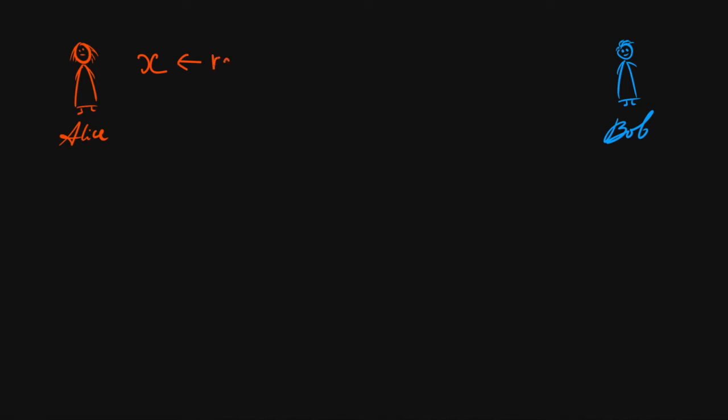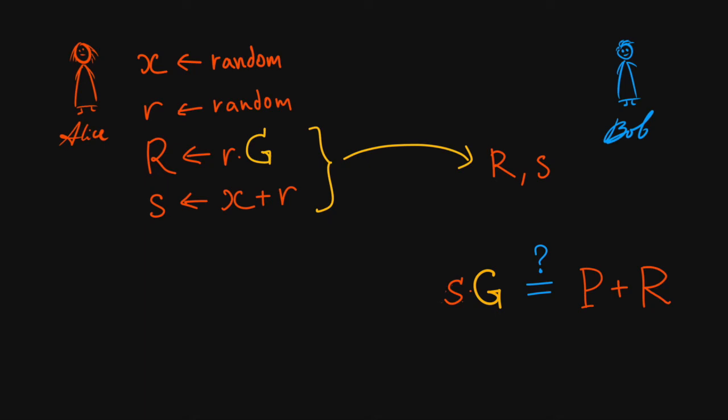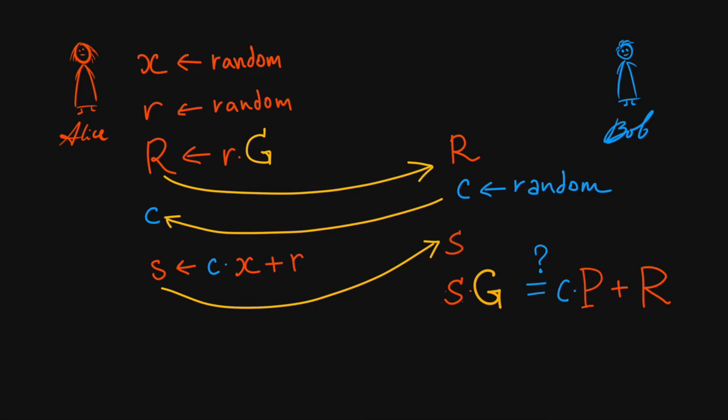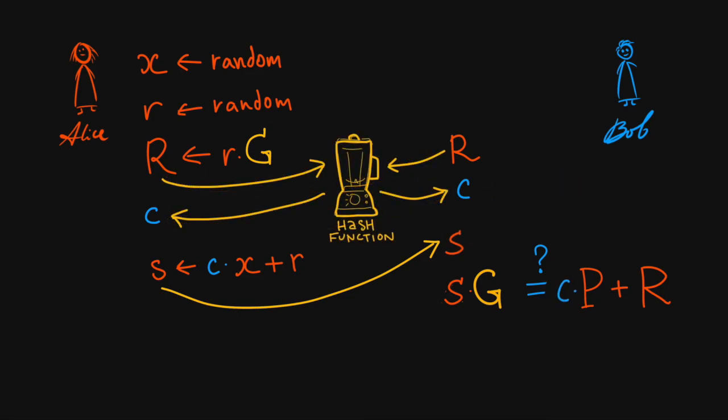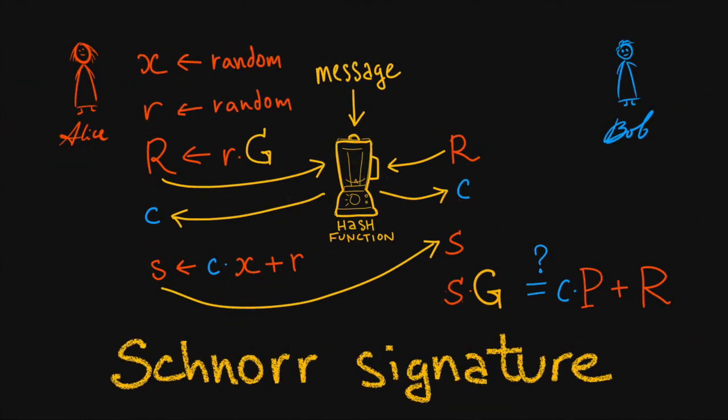Let's recap. We need a signature scheme that lets anyone authenticate messages. We start with an interactive protocol that proves the knowledge of a private key. To protect the private key, we blind it with a secret nonce. And to make sure the blinding portion does not cancel out the public key, we introduce an unpredictable challenge number. Then, we make the scheme noninteractive using the Fiat Shamir transform by generating a challenge through a cryptographic hash function. Finally, we make sure that the signature cannot be reused with a different message by binding the challenge to the message. The resulting scheme produces a 64-byte signature that can be verified by anyone with a corresponding public key. And this is the complete protocol for the Schnorr signature.